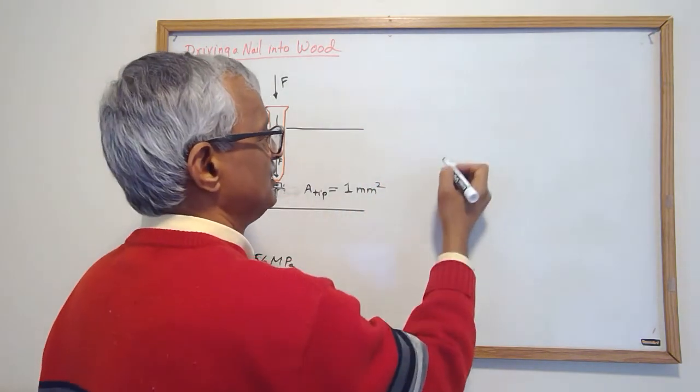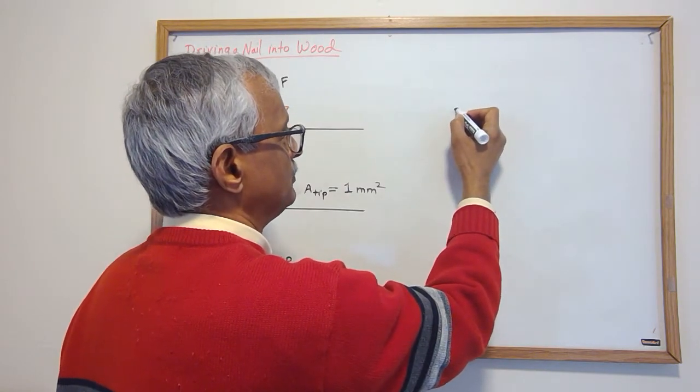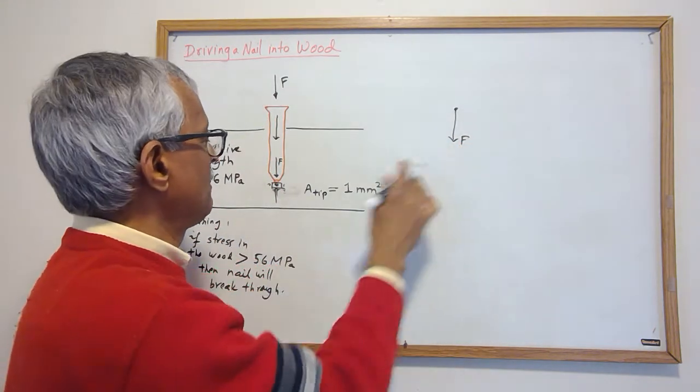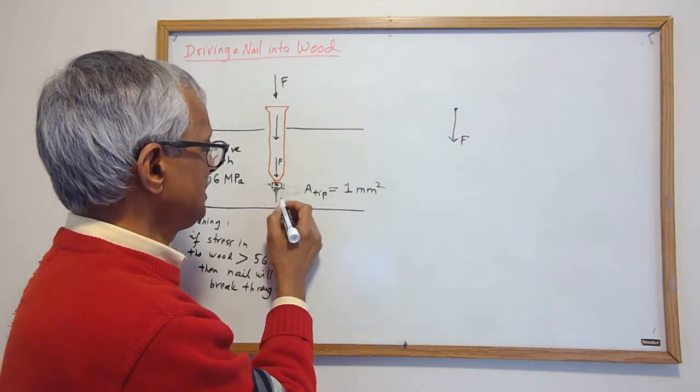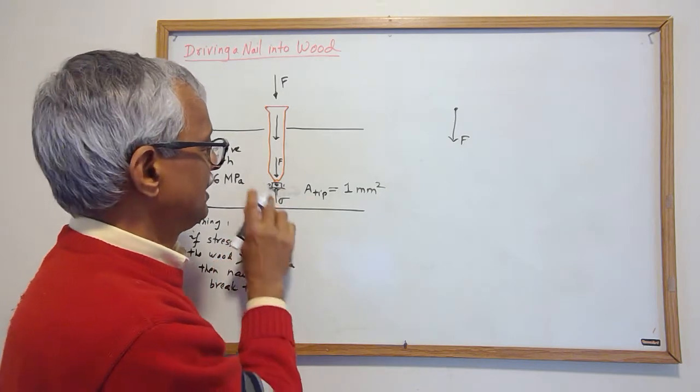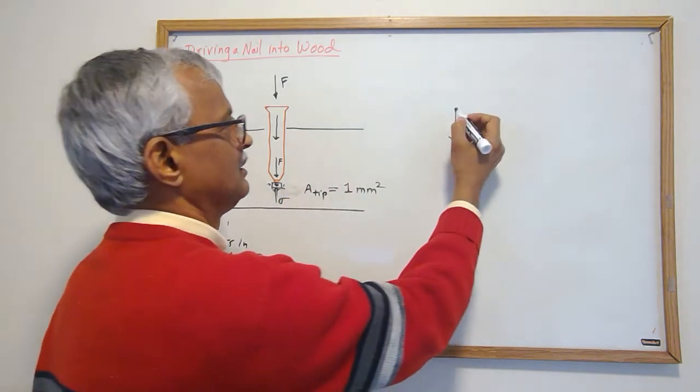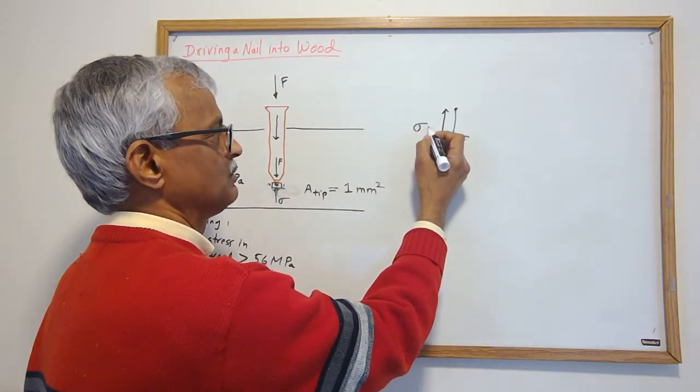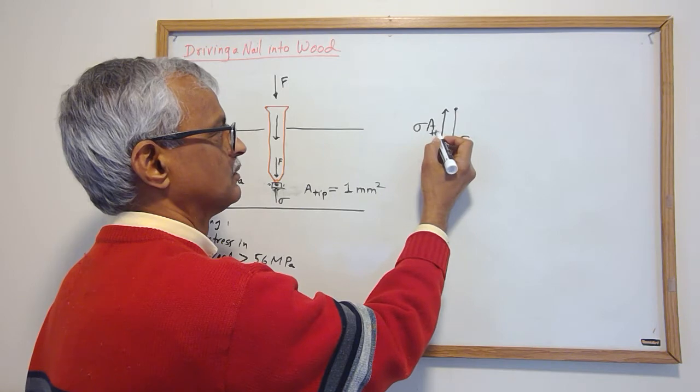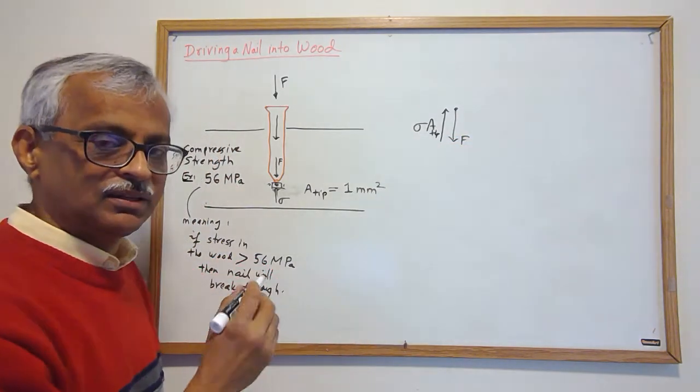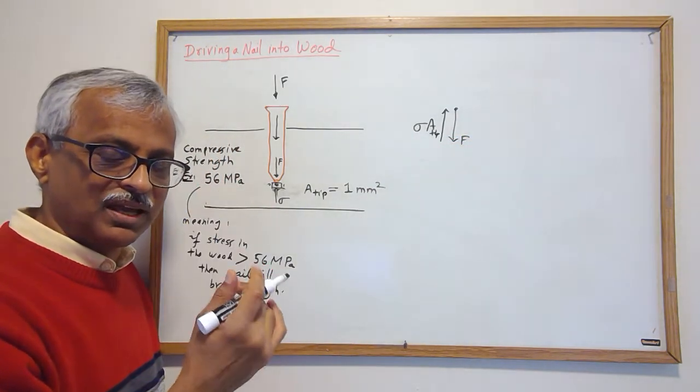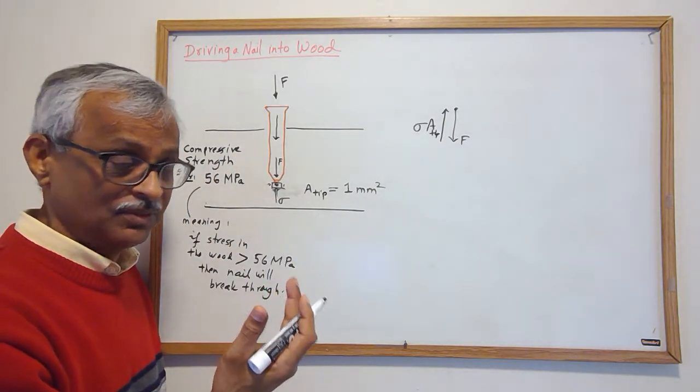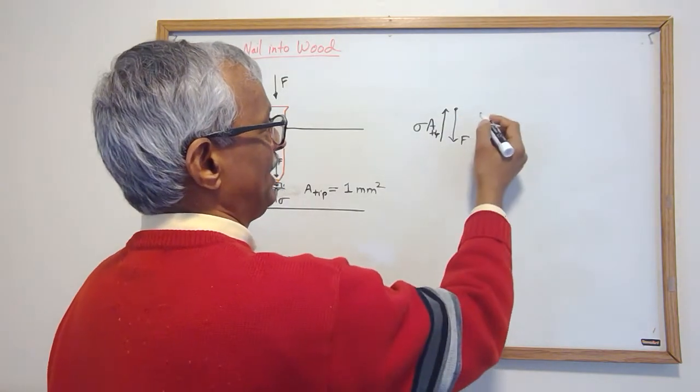So we will balance the forces. We have a force from above—that's the force I need. If the stress here is sigma, and it's acting over the tip area, then the force from below is sigma times A_tip. The stress is force over area, so force is stress times the area.